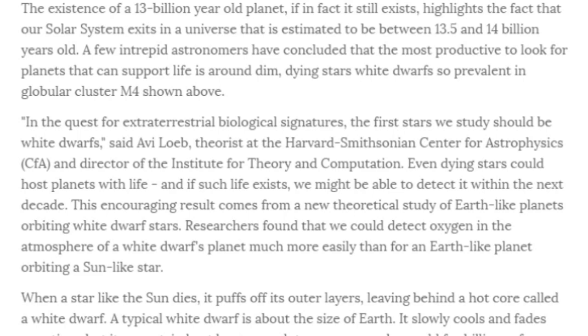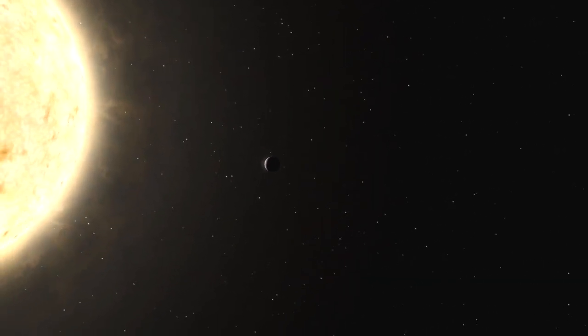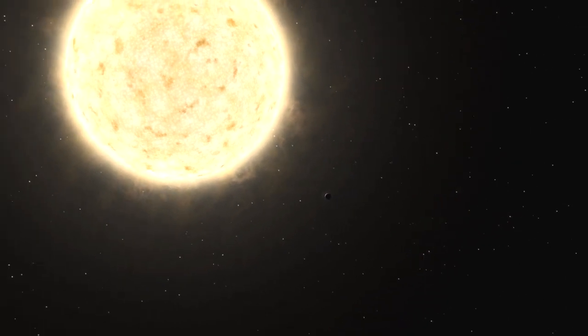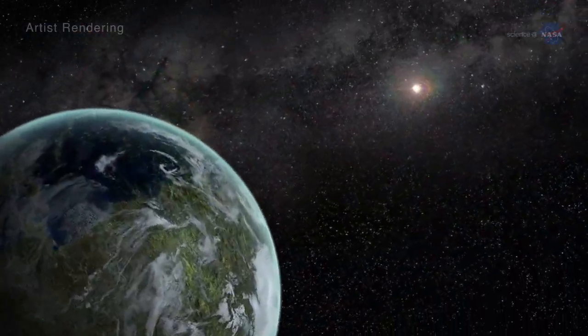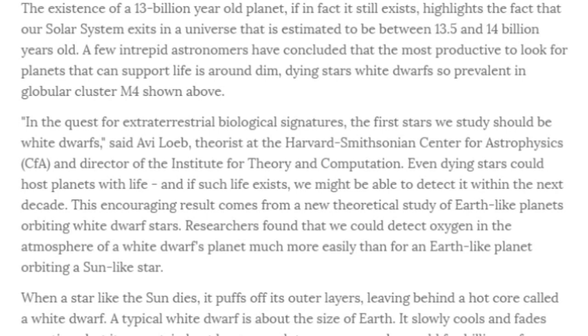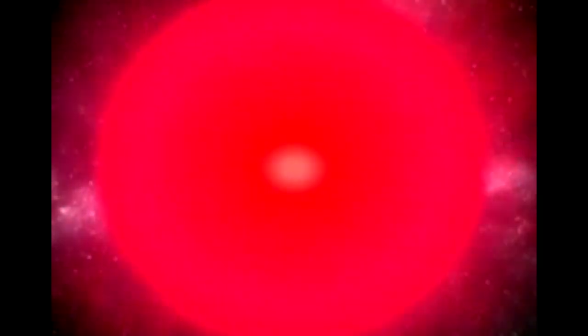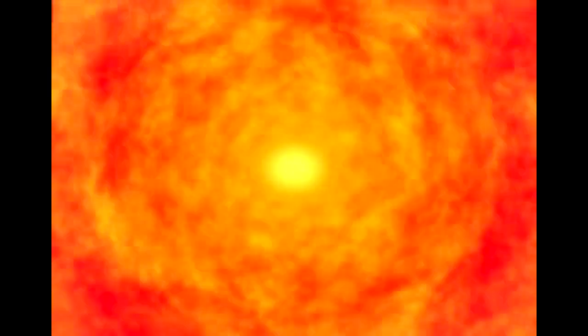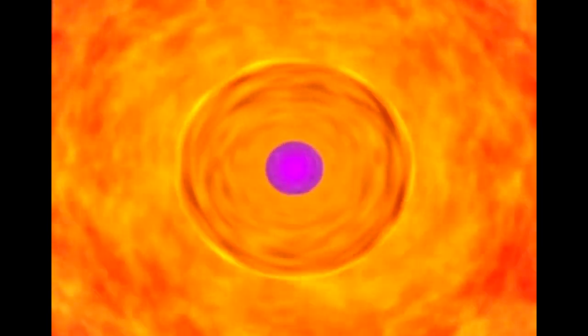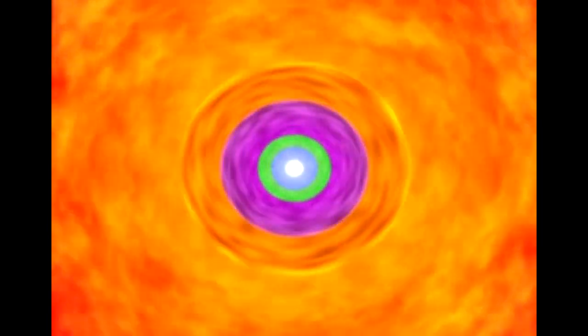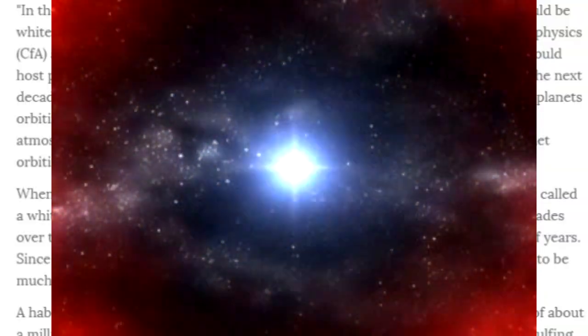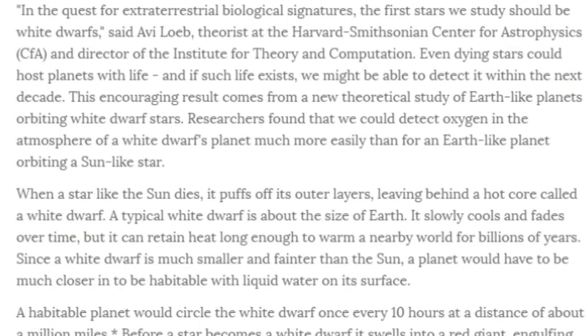The existence of a 13 billion year old planet, if in fact it still exists. What the hell? I'm reading an article about a planet that may not even exist anymore. And if it's gone, I don't know it existed in the first place. This highlights the fact that our solar system exists in a universe that is estimated to be between 13.5 and 14 billion years old. Now I'm telling you what I need to do is make one of those personal carbon daters that I can sell to everybody so you can go around carbon dating everything to verify all this stuff. But that's just a pipe dream.